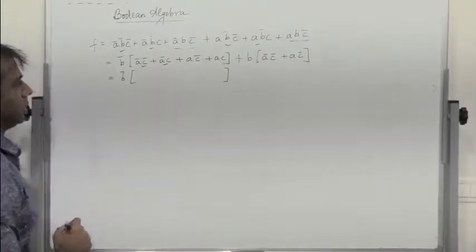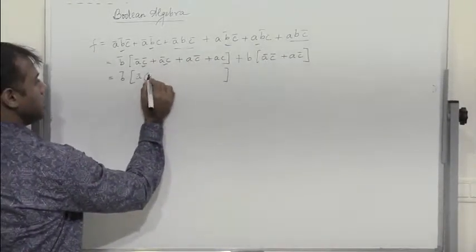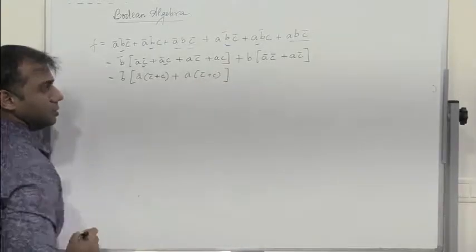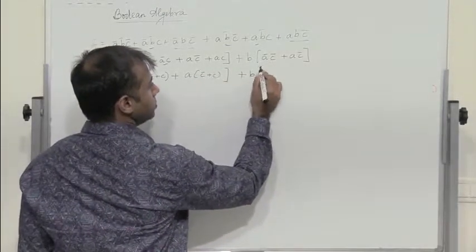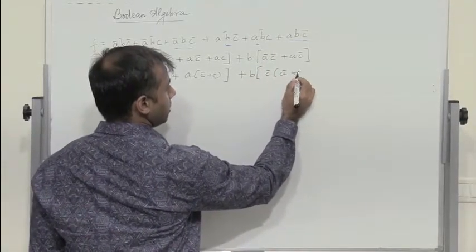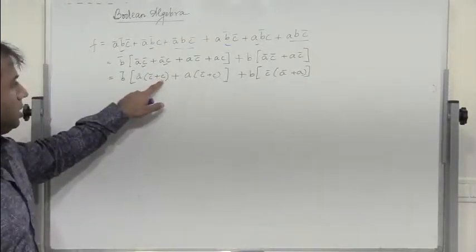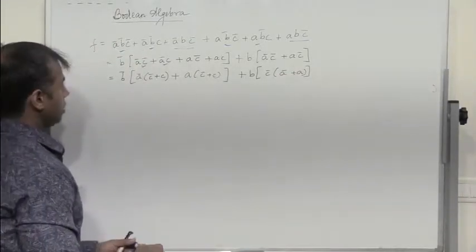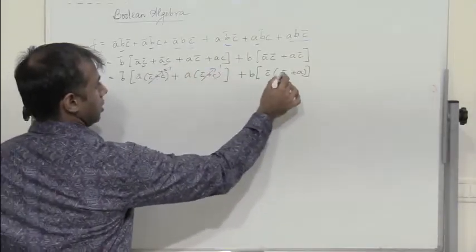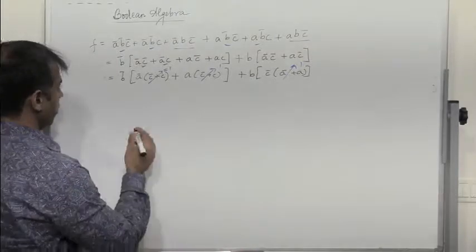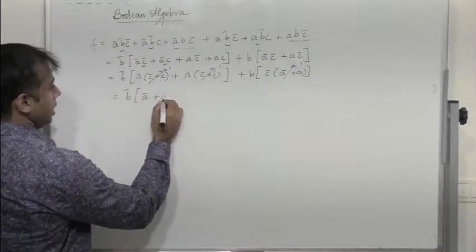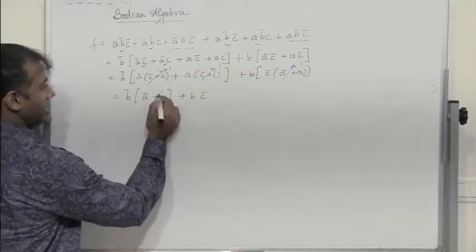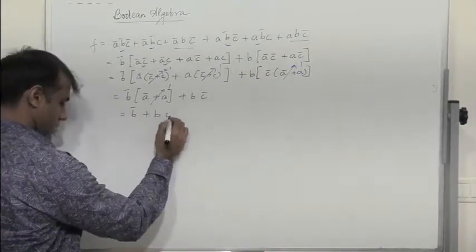Now observe the first two terms: A bar is common, so take A bar(C bar plus C). In the next two, A is common: A(C bar plus C). Plus B, and in the remaining term C bar is common: C bar(A bar plus A). Since C bar plus C is 1 and A bar plus A is 1, all are equal to 1. So we get B bar(A bar plus A) plus B C bar, which simplifies to B bar plus B C bar.